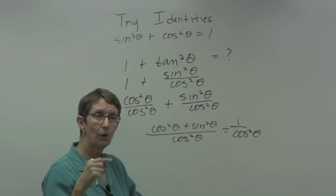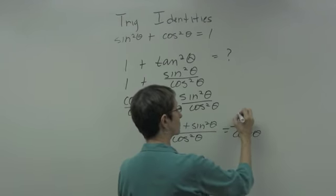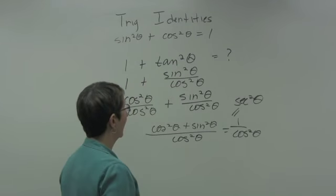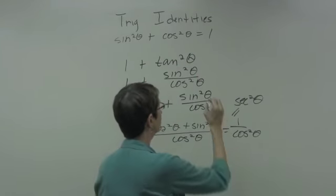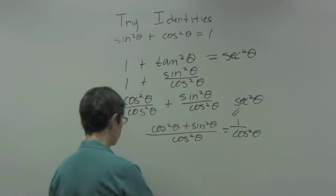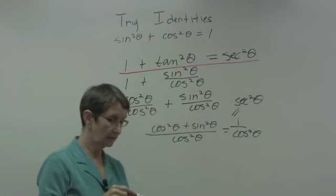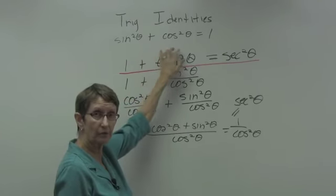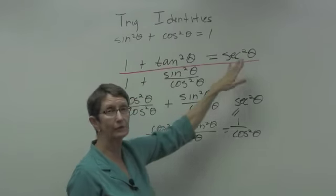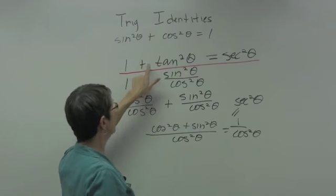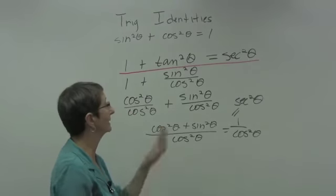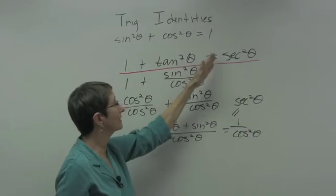And what's 1 over cosine? 1 over cosine is secant, so this is actually equal to secant squared of theta. So I have simplified or rewritten 1 plus tangent squared as secant squared. You can think of this as an additional identity alongside the Pythagorean identity: sine squared theta plus cosine squared theta equals 1. You also have 1 plus tangent squared equals secant squared. You can memorize this or derive it every time — it doesn't make any difference because they're identities.